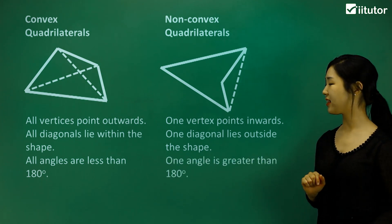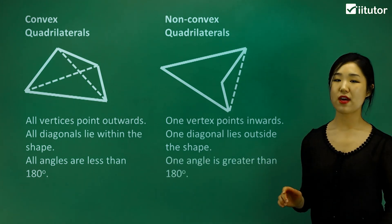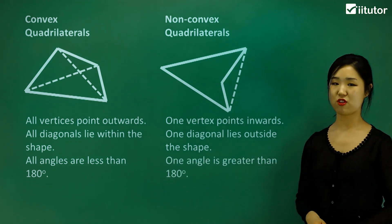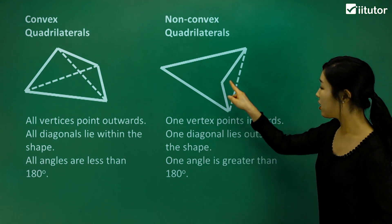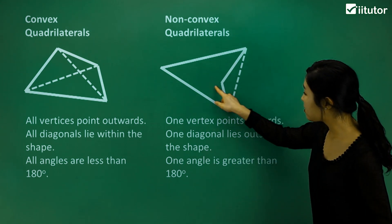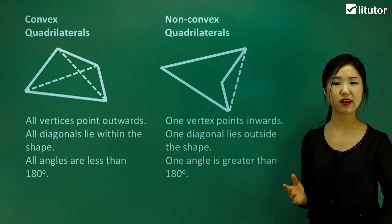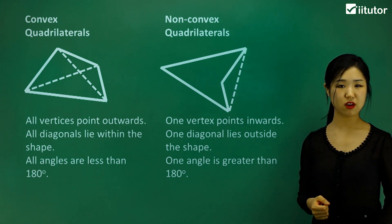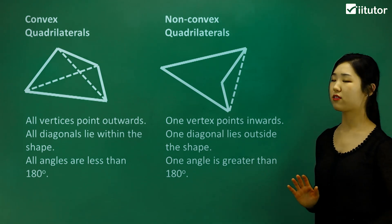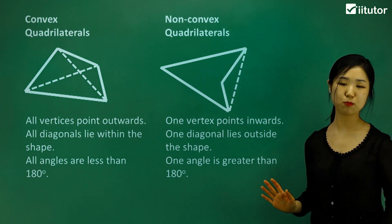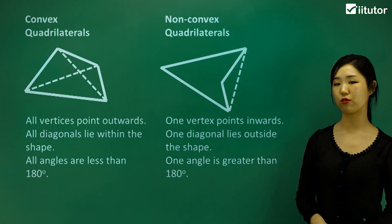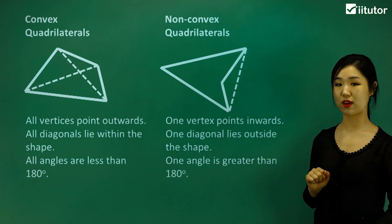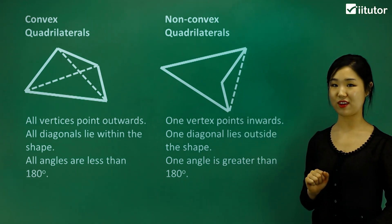Finally, you should also know that one angle is greater than 180 degrees. If you have a look at this angle, it's a reflex angle, which is definitely greater than 180 degrees. Therefore, this must be a non-convex quadrilateral. Non-convex quadrilaterals must satisfy all three of these key features.